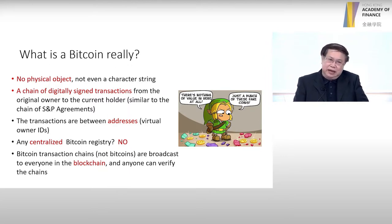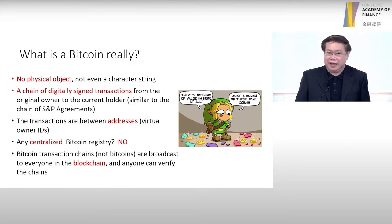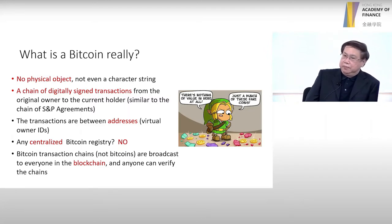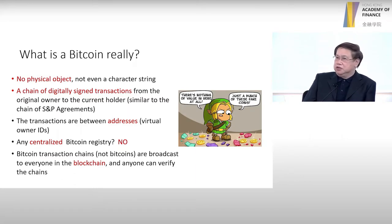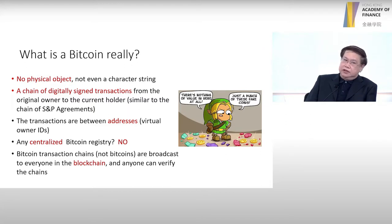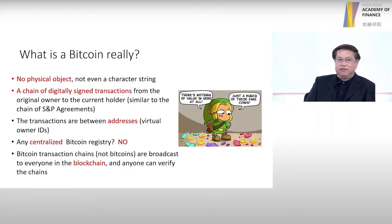Is there any centralized ledger? No. In Bitcoin or in many cryptocurrencies, the ledger is distributed. That is why it's called distributed ledger technology. And all these transactions are put together and stored in the place called the blockchain.